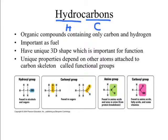As hydrocarbons get more and more complex, they're going to have unique 3D shapes that are important for function. We can also have different functional groups — other atoms attached to hydrocarbons — that also have important functions. For example, an OH group is called a hydroxyl group, found in alcohols and sugars. A carbon double-bonded to oxygen is called a carbonyl group, also commonly found in sugars.